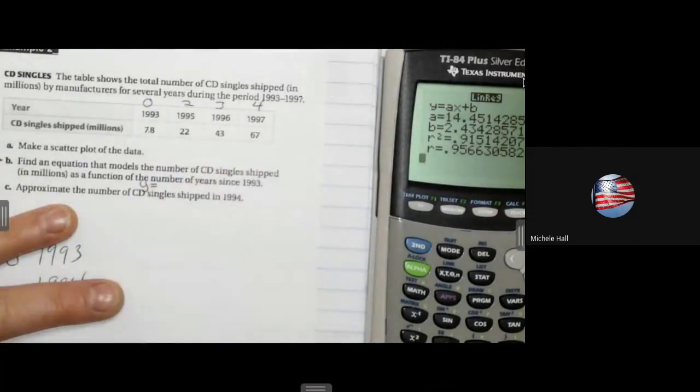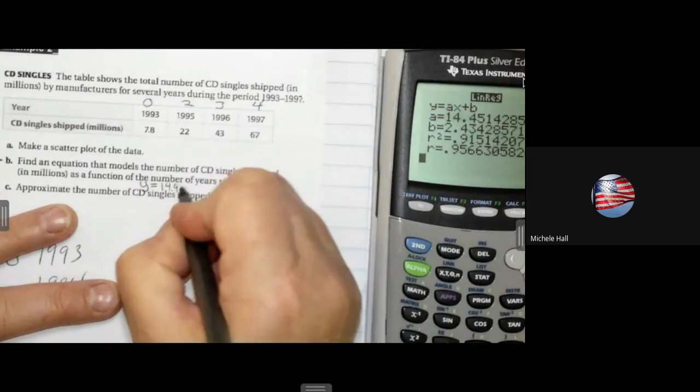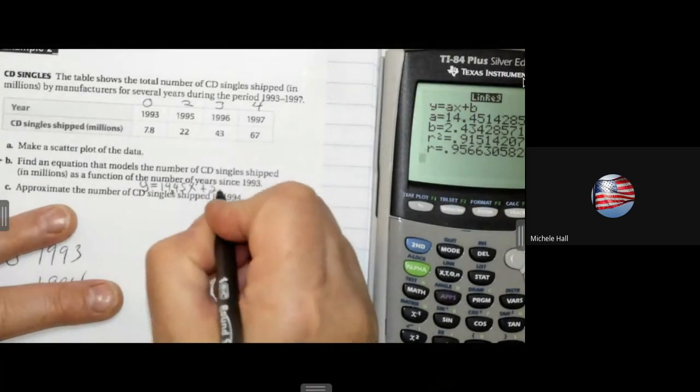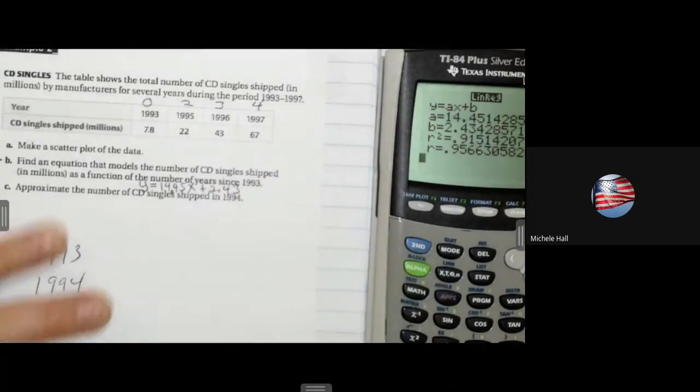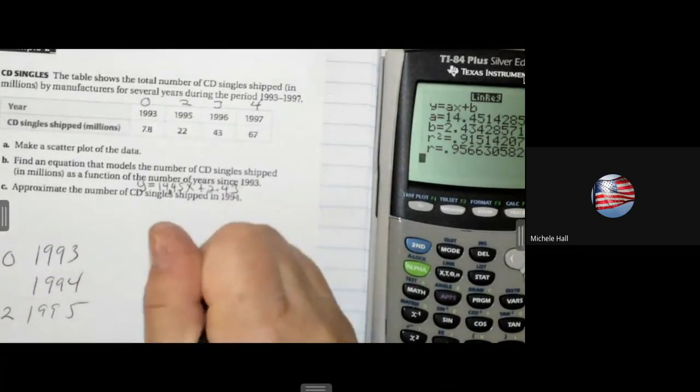Y equals 14.45 times x, and my b is 2.43, plus 2.43. And before I get off this page I'm going to write down the correlation coefficient r.